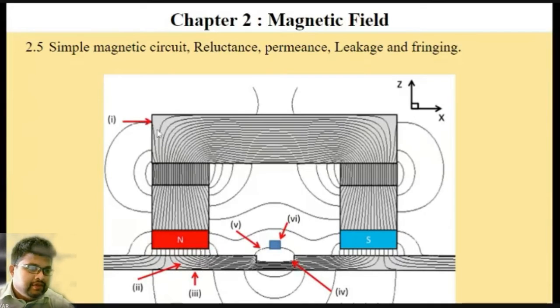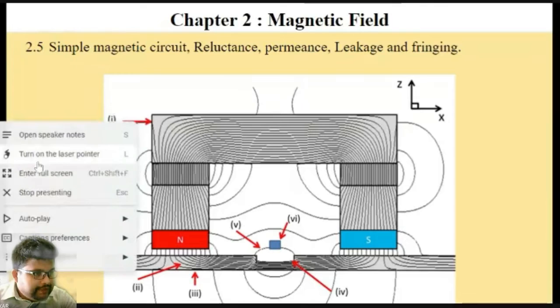We can see how the magnetic lines of flux are passing through the core. This particular core is representing the magnetic lines of flux which are flowing through the core as well as apart from the core. We can see this part - this is the pointer.